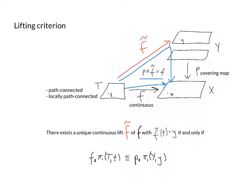Let's also pick a pre-image for x called little y in the covering space, so y maps down to x and little t maps to x as well. The initial condition I want to put on my lift is that F̃ takes t to y. The claim is: there exists a unique lift F̃ of F satisfying this initial condition F̃(t) = y if and only if the following algebraic condition holds.